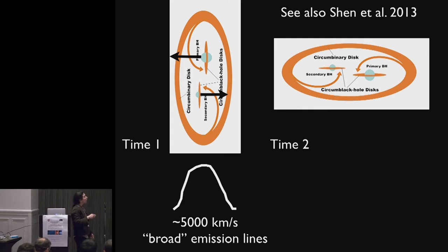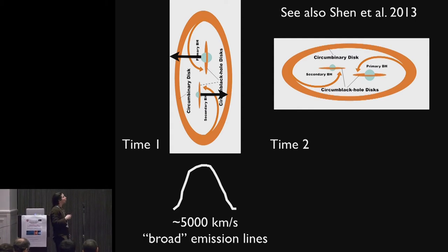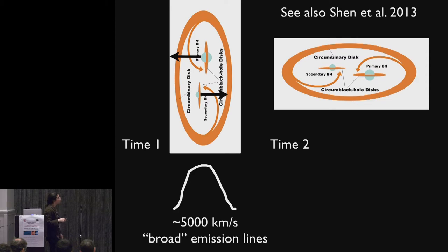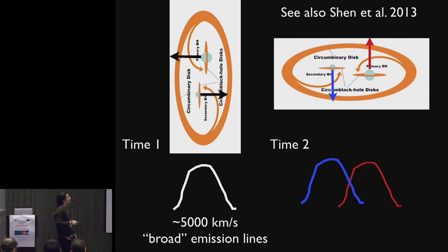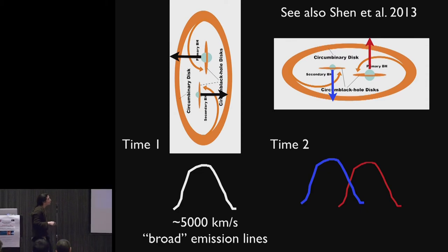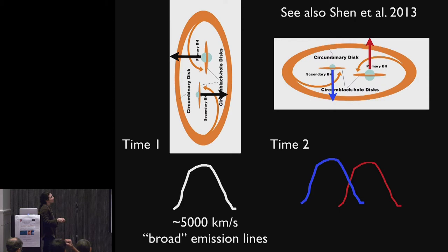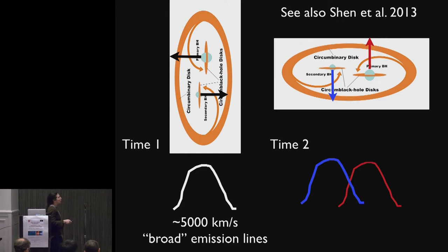So we thought we would try something a little bit different and just take multiple observations of all the accreting black holes that we can find. And the idea being that we should see velocity shifts if we have a pair of black holes at, say, subparsec separations.